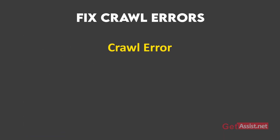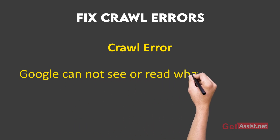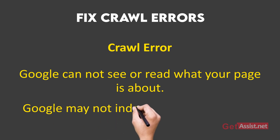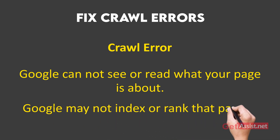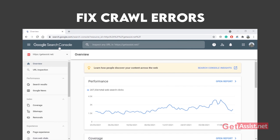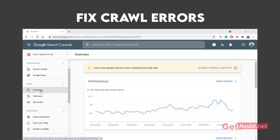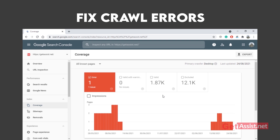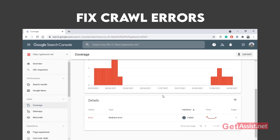A crawl error means that Google cannot see or read what your page is about. Being unable to view your page means Google may not index or rank that page in search results. You can easily identify crawl errors using Google Search Console — once you log in, click on 'Coverage' on the left-hand menu. There you will be able to view all URLs that contain errors and then fix them.